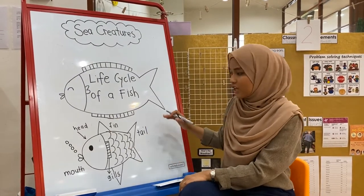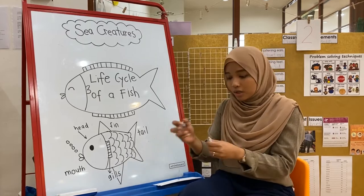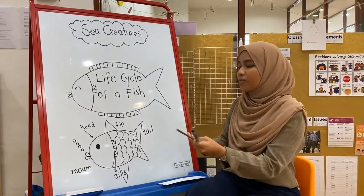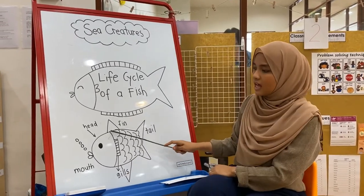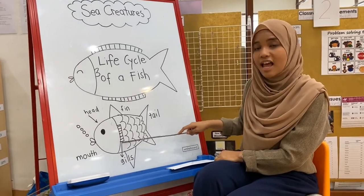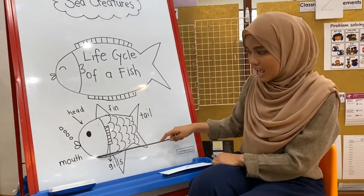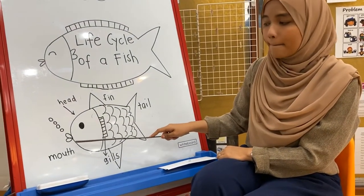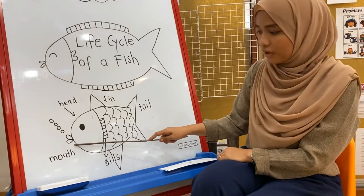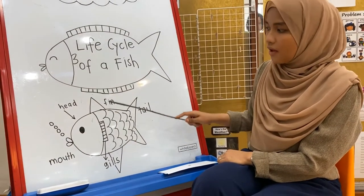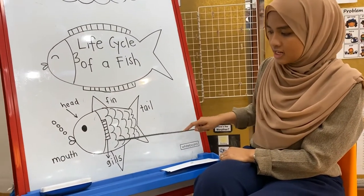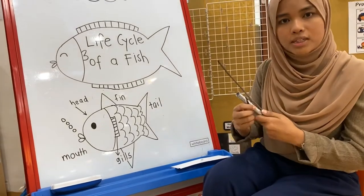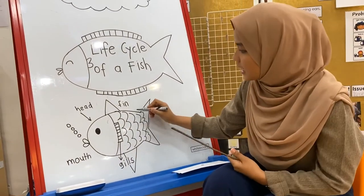So these are the parts of the fish. Shall we go through it together one more time? This is the head. These are the eyes, mouth, gills, fin, and tail. Oh, I forgot one more thing — the scales.